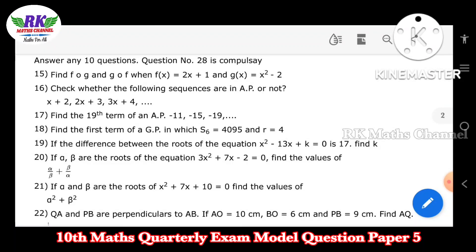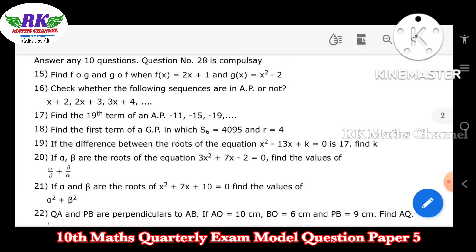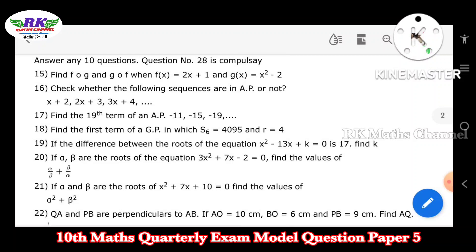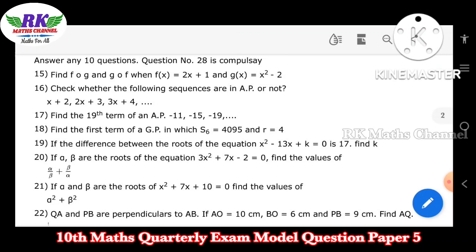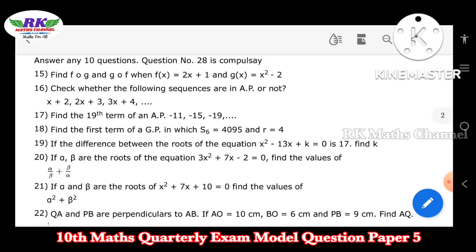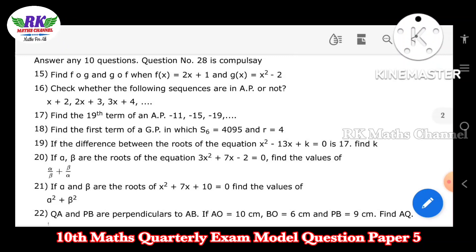Check whether the following sequences are in AP or not — the second sequence is an arithmetic progression. Find the 19th term of the AP: minus 11, minus 5, minus 8. The nth term formula is TN equal to A plus N minus 1 into D.